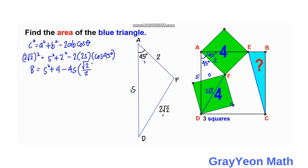We can cancel the 2 in the denominator with the 4, leaving us with: 8 = S² + 4 − 2√2·S. This simplifies to S² + 4 − 2√2·S = 8.